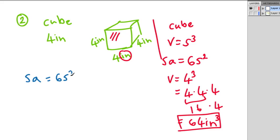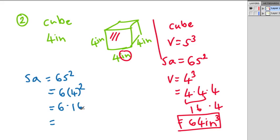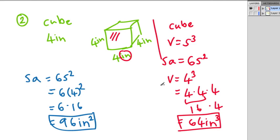For the surface area we use 6s squared and substitute s equals 4. We must deal with the exponent first: 4 squared is 16, then 6 times 16. We can do 6 times 10 equals 60, plus 6 times 6 equals 36, giving us 96. The answer is 96 inches squared, and it's squared because we are dealing with area.